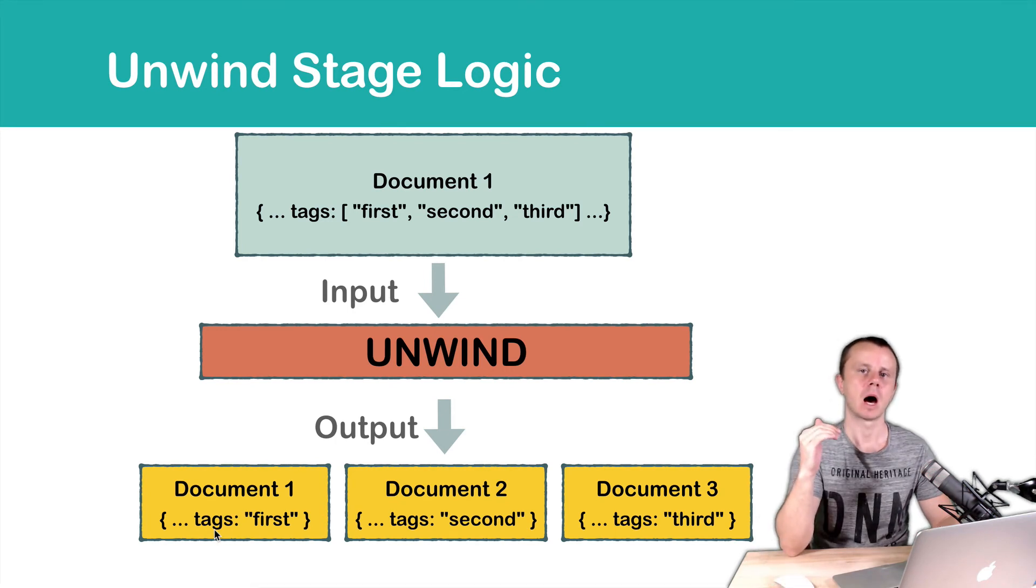Let's summarize. Unwind stage takes documents as an input, and then produces several documents per each input document. In this example, we produced three documents for one input document, because array tags contains three elements.